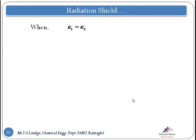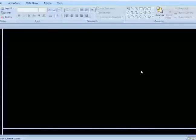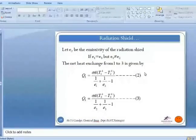Now consider the case when E1 equals E3 — the emissivity of the first surface equals the emissivity of the third surface. The first surface and third surface are the two planes; the radiation shield is the second surface introduced in between. We equate equation 2 and equation 3 under this condition.